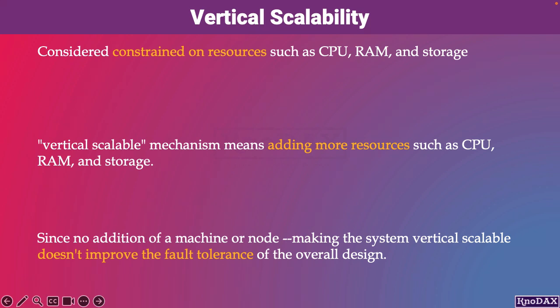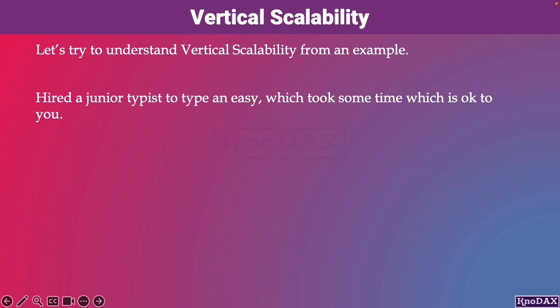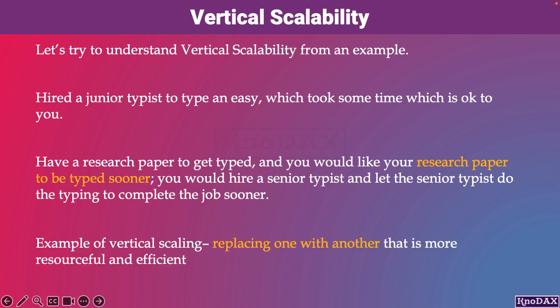Let's try to understand vertical scalability from an example. Suppose that you have hired a junior typist to type an essay, which took some time and that is okay to you. Now suppose you have a research paper to get typed, and you would like it to be typed sooner. You would hire a senior typist to complete the job sooner. This is an example of vertical scaling — replacing one with another who is more resourceful and efficient.